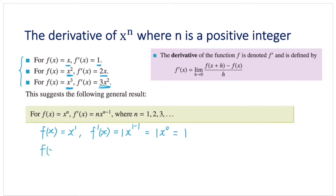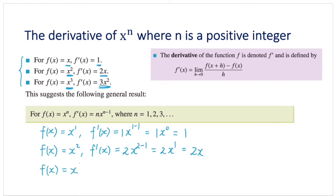In the second question, we have f of x is equal to x squared. Its derivative f dash of x is going to be — you bring the 2 to the front, and you reduce the power by 1. So 2 minus 1 equals 2x to the power of 1, or simply 2x. Last question, we have f of x is equal to x cubed, and its derivative f dash of x is going to be — you bring down the 3 to the front, 3x to the power of 3 minus 1, which is 3x squared.